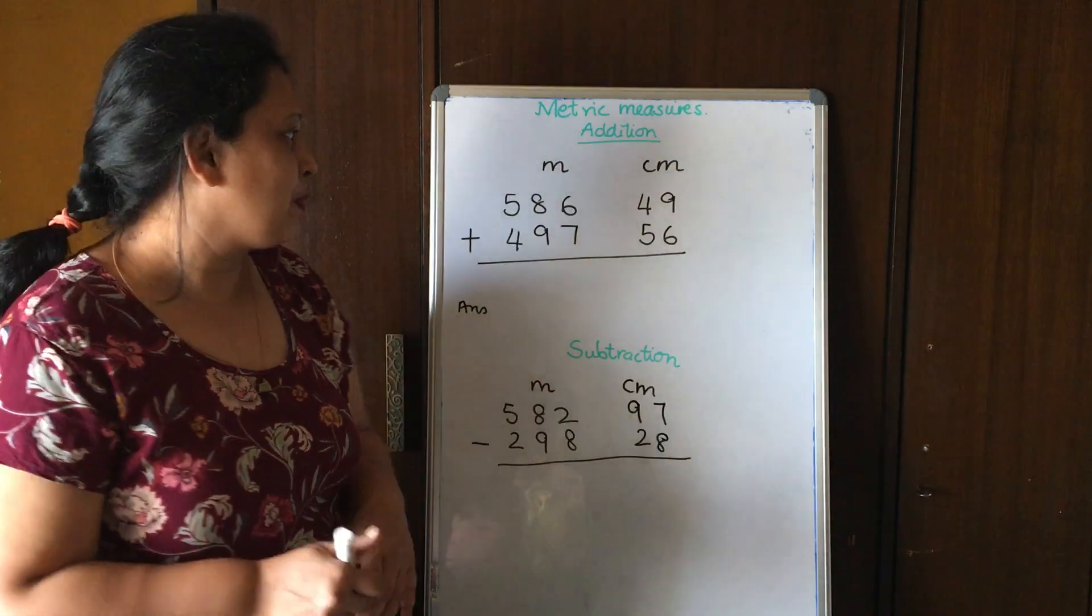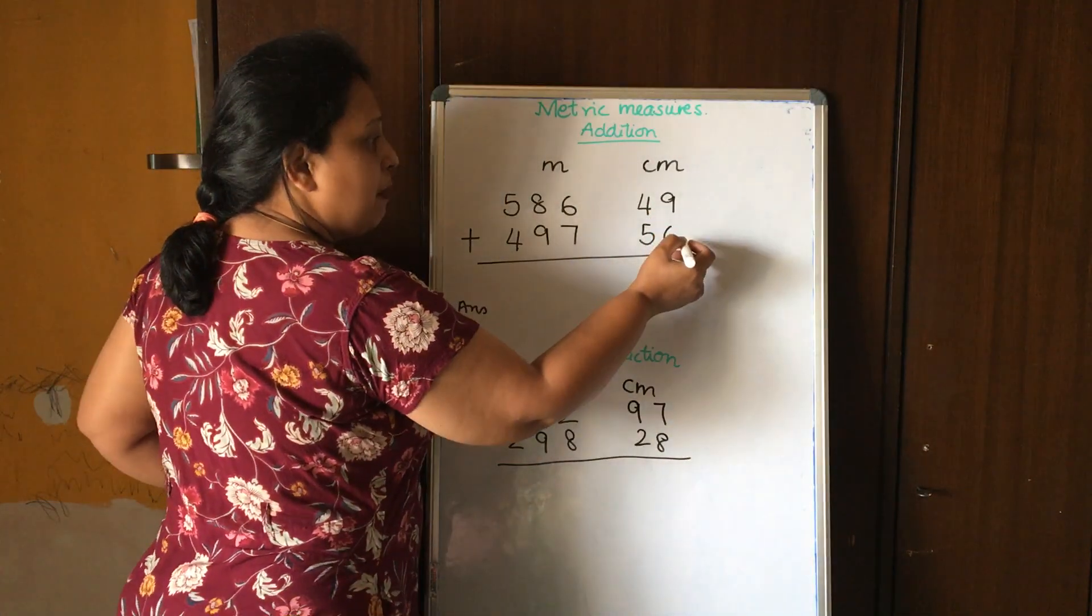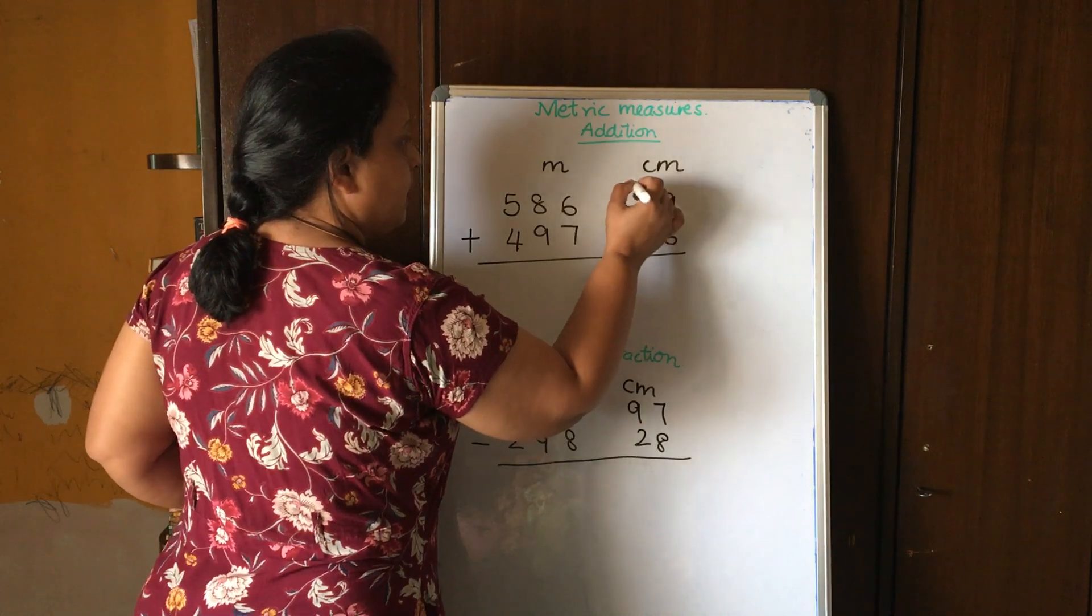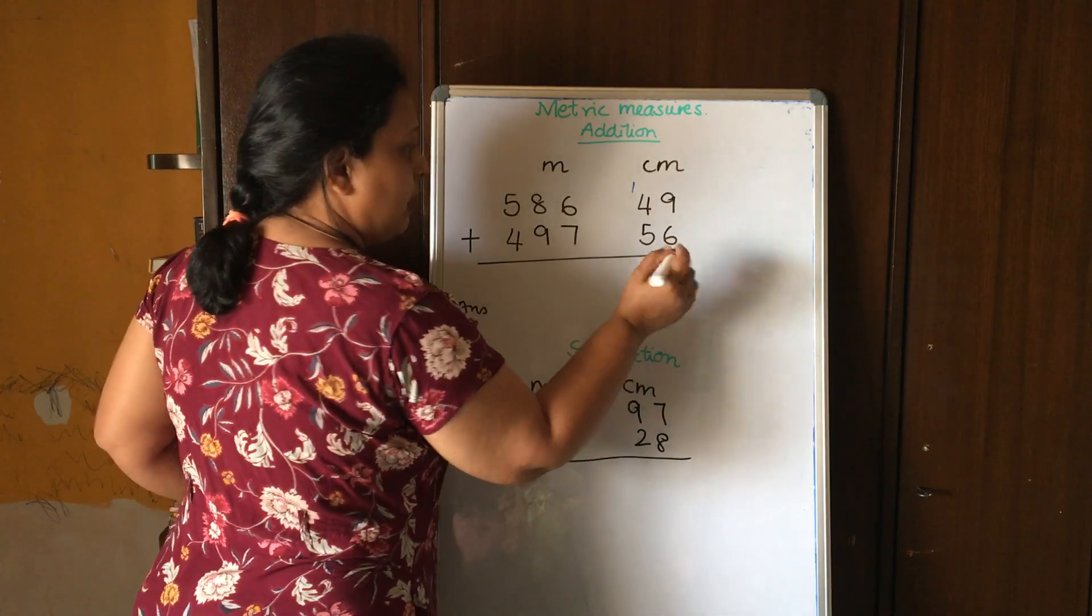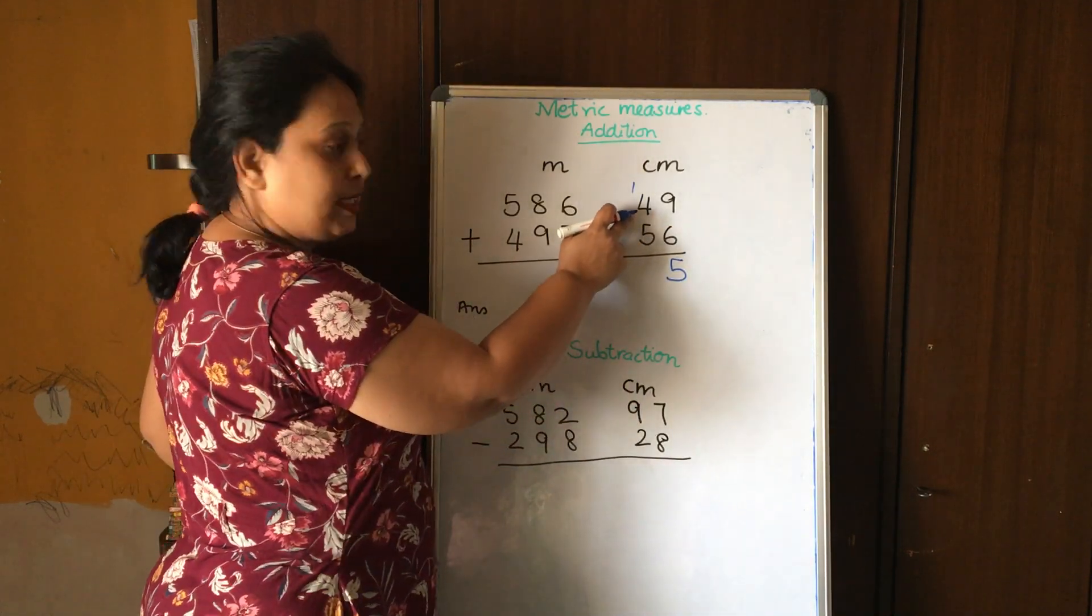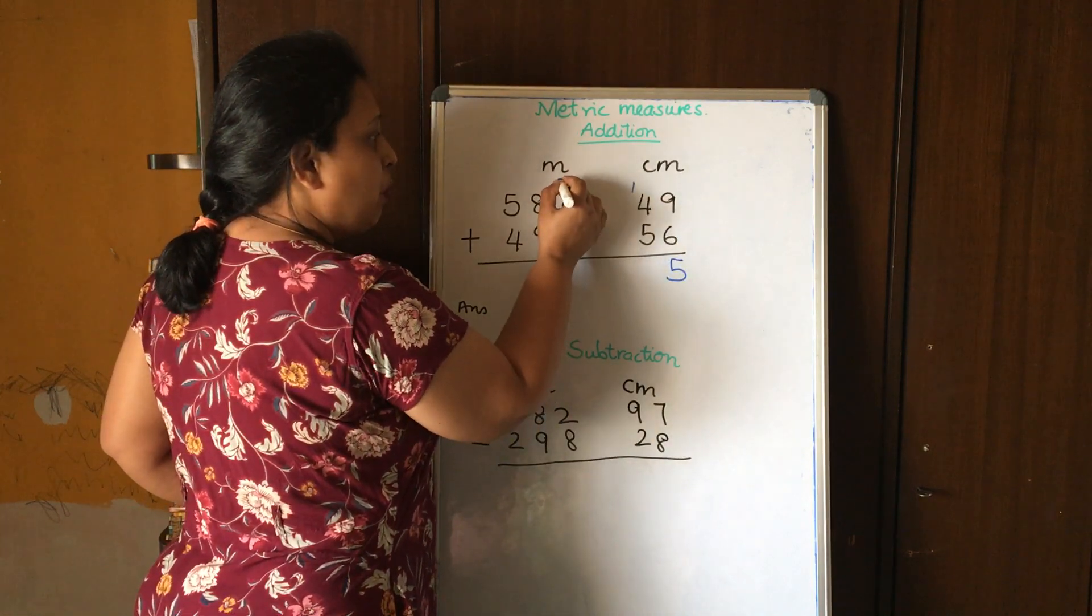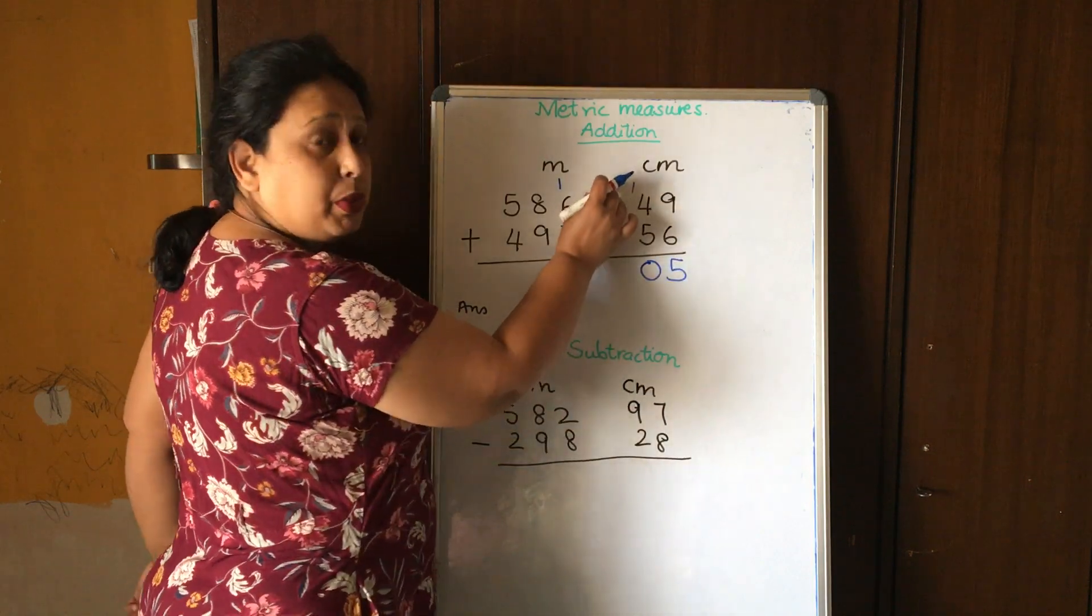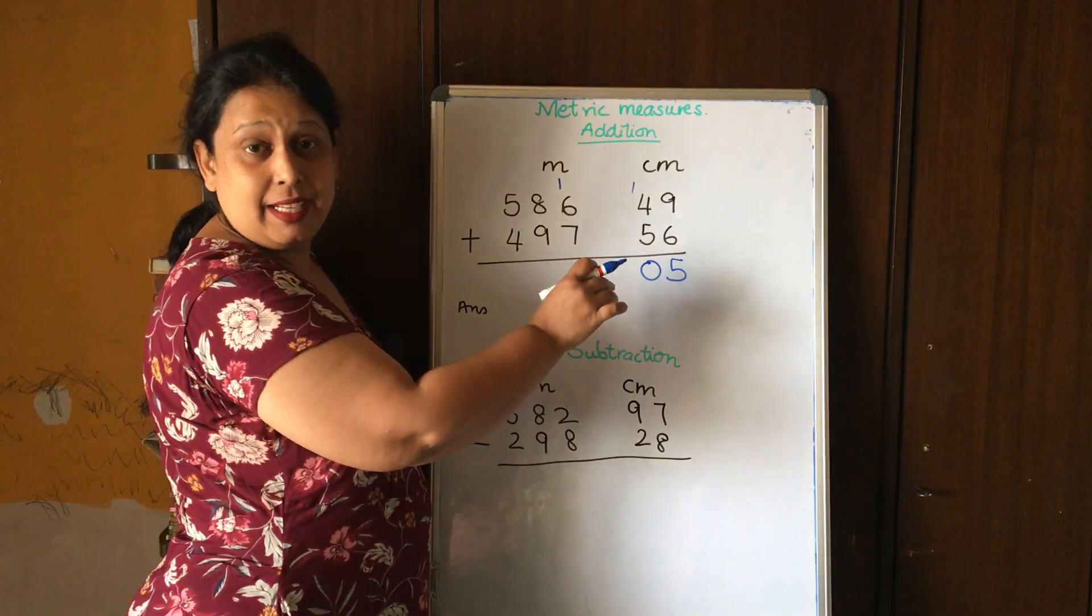So let's work on this one. Nine plus six is fifteen - five and four is nine, plus one, ten. Now this one I carry over in the meters house. I don't put any point or anything here. In rupees and pesi, we put the point to demark what is rupees and pesi.